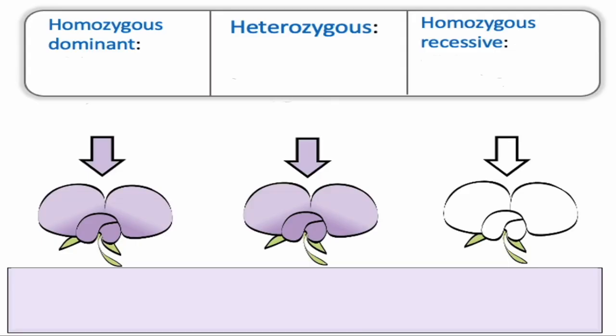This brings us to Gregor Mendel. Gregor Mendel studied pea plants, and those pea plants had two different colored flowers — purple flowers and white flowers. Purple flowers being a phenotype, and a white flower being a phenotype. Both are physical expressions of those genes.